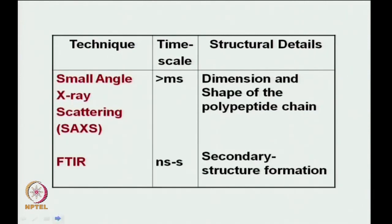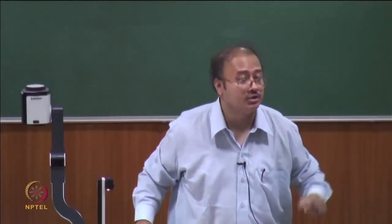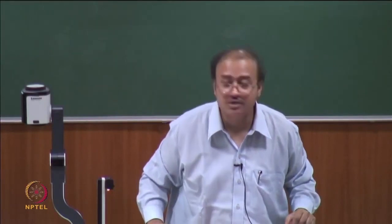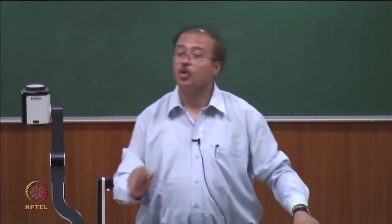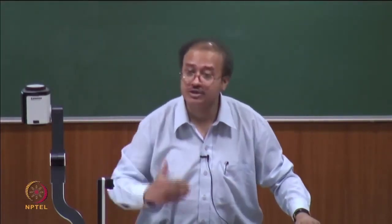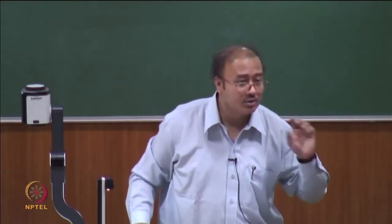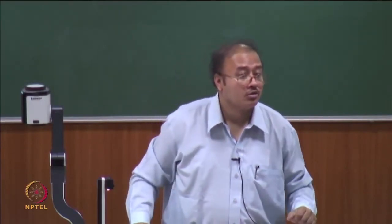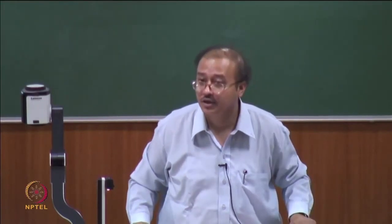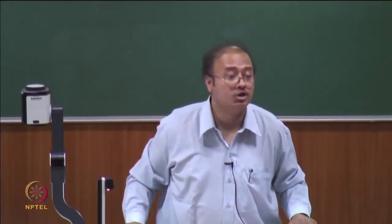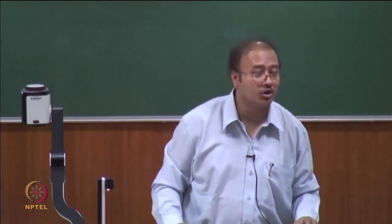Small angle X-ray scattering, popularly known as SAXS, gives you the dimension and shape of the polypeptide chain. If you are unfolding a protein — going from a native to a denatured state — someone asks about the change in dimension. Some proteins undergo a huge change in dimension, others less so. SAXS gives an idea about the approximate dimension of your protein, whether in the unfolded or folded state. Since you are doing this in solution, you always look at the hydrodynamic radius because water molecules are associated.